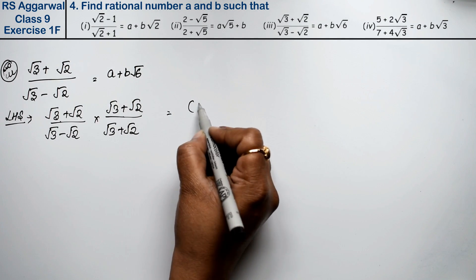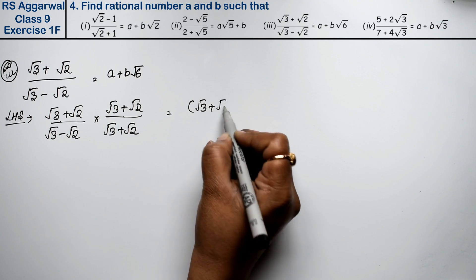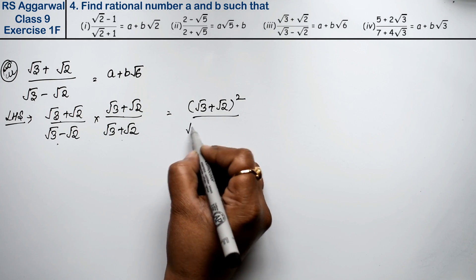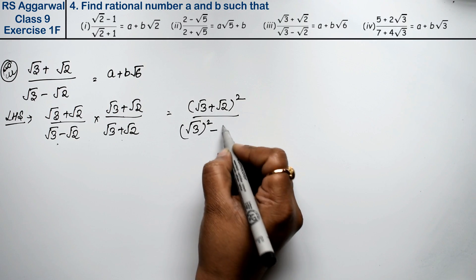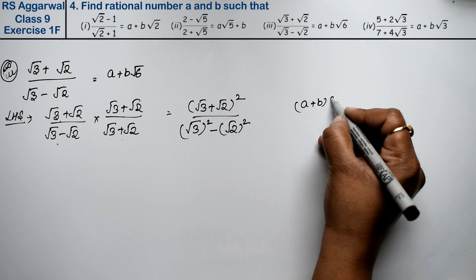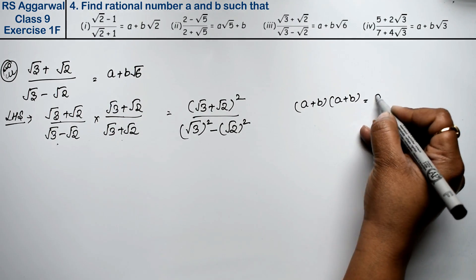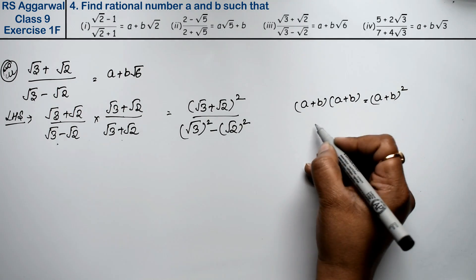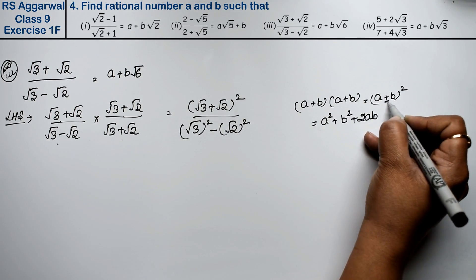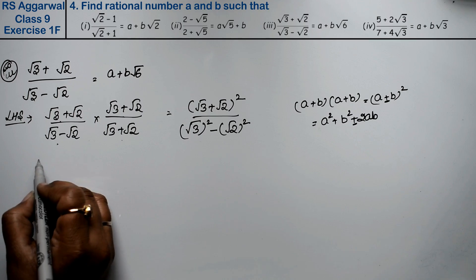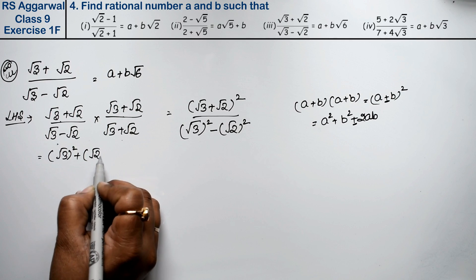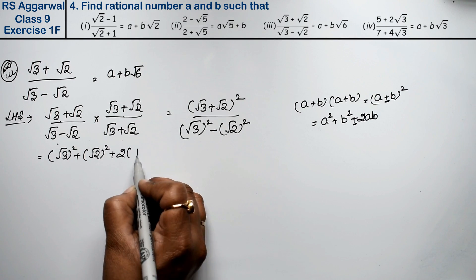Since both terms in the numerator are plus, we apply the (A plus B) whole square formula: A squared plus B squared plus 2AB. In the denominator we have A plus B times A minus B, giving A squared minus B squared. So the denominator is root 3 squared minus root 2 squared, which equals 3 minus 2 equals 1.